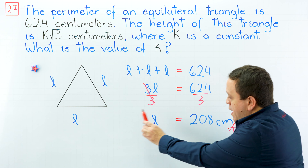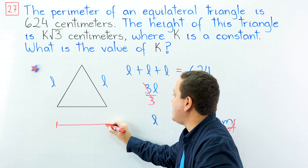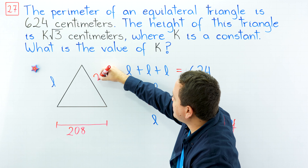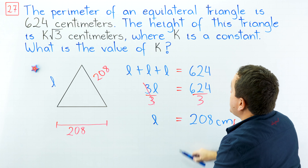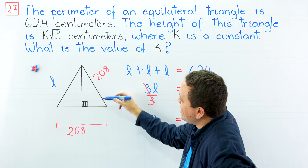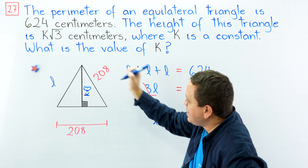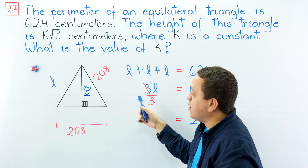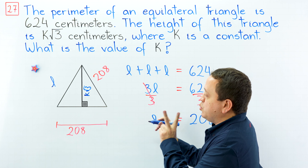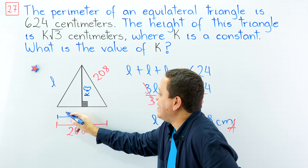Now we are going to replace this value. I am going to replace L with 208, so the length of each side is 208 centimeters. The height of this triangle is K times the square root of 3 centimeters. I am going to draw the height here, and we have 90 degrees at the base. Don't forget that in an equilateral triangle the height is also the perpendicular bisector, so the height divides the base into two equal segments, each of length 104.